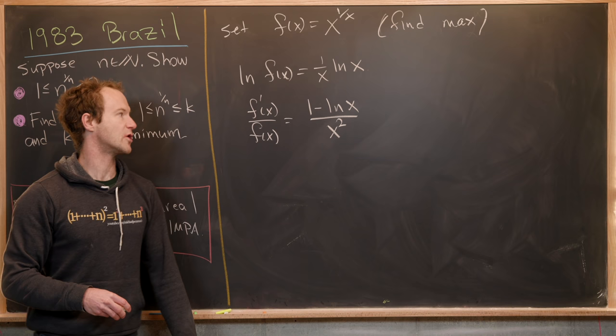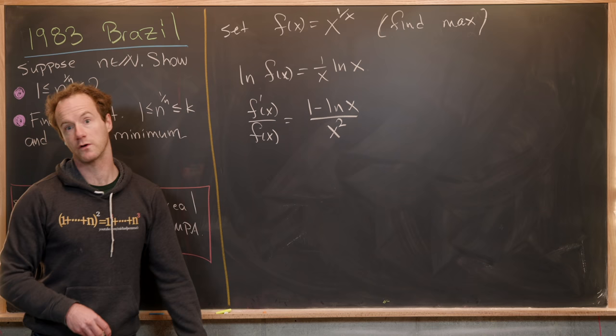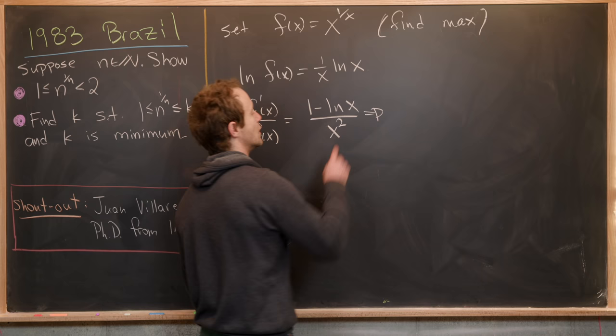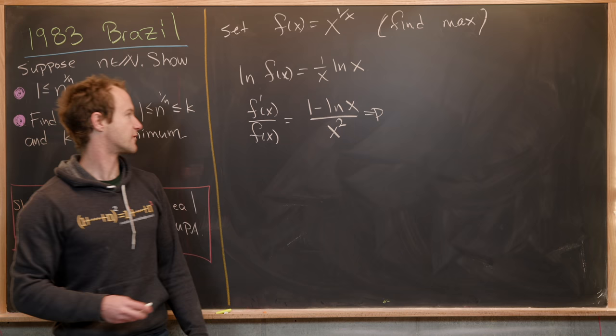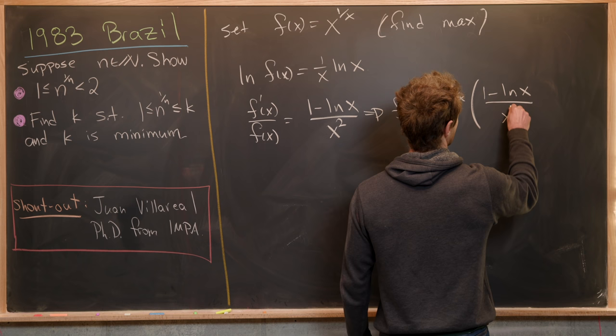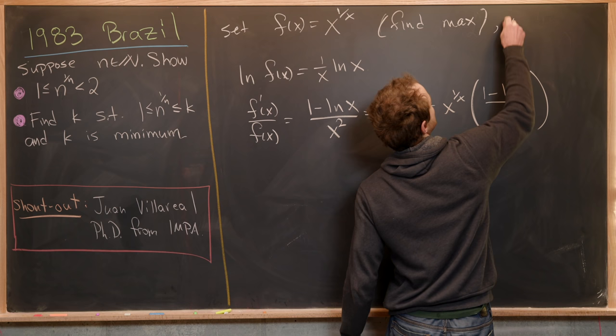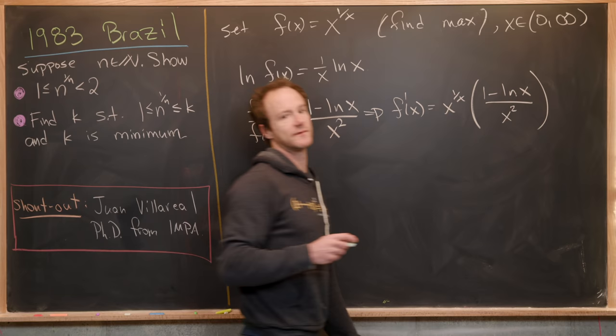Notice: the derivative of 1/x is −1/x², which multiplies ln x, and the derivative of ln x is 1/x, which multiplies 1/x giving 1/x². That's how you get (1 − ln x)/x². Now multiplying both sides by f(x) = x^(1/x), we get f'(x) = x^(1/x) · (1 − ln x)/x². We should also note that the domain is only positive real numbers, i.e., x ∈ (0, ∞).